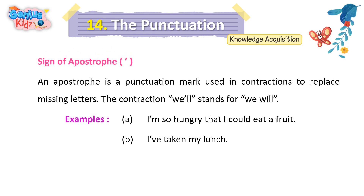Sign of Apostrophe. An apostrophe is a punctuation mark used in contractions to replace missing letters. The contraction we'll stands for we will. Examples: A. I'm so hungry that I could eat a fruit. B. I've taken my lunch.